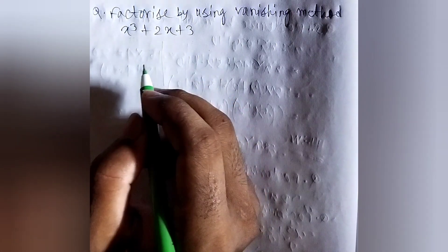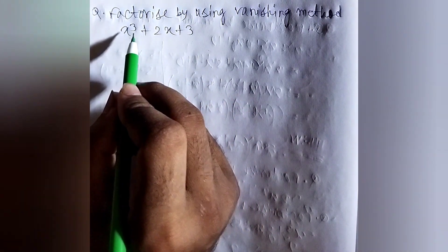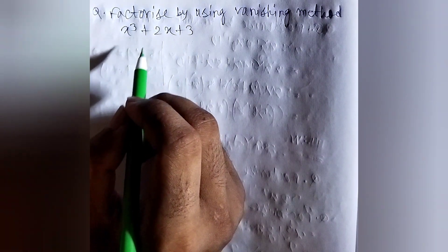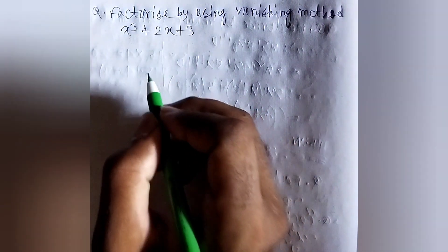For the middle term method, the power of x was 2, but here, the power of x is 3, that is x cube. That is also why the vanishing method is called cubic factorization.